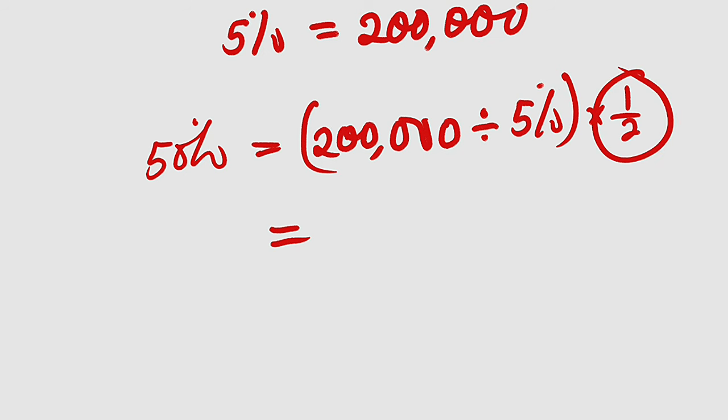The whole of this will give us 4 million and 4 million divided by 2 or multiplied by 1 over 2 is the same thing as 2 million. Very simple, right?